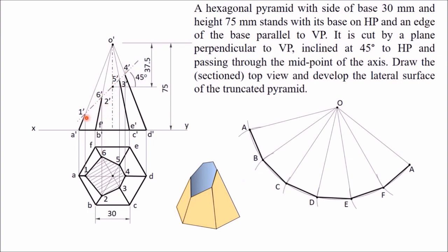Now mark points 1, 2, 3, 4, 5, 6 on the development at their true lengths from O. For point 1: in the front view, A'1' is visible and its top view A1 is parallel to the XY line, so A'1' is the true length. Measure this length and mark point 1 on OA in the development. Similarly for point 4: OD in the top view is parallel to XY, so OD or D4 gives the true length — measure and mark point 4 on OD.